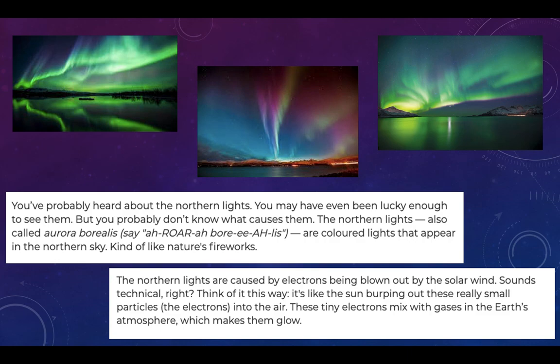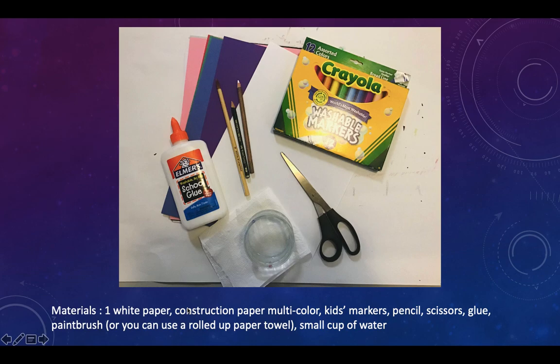The Northern Lights are caused by electrons being blown out by the solar wind. Sounds technical, right? Think of it this way — it's like the Sun burping out these really small particles, the electrons, into the air. These tiny electrons mix with the gases in the Earth's atmosphere, which makes them glow.